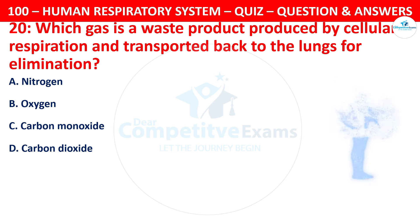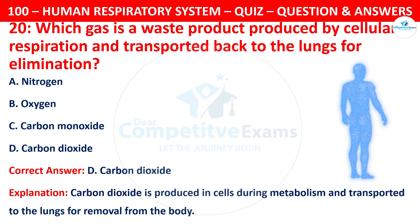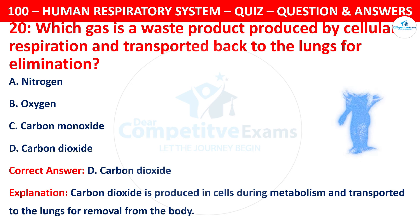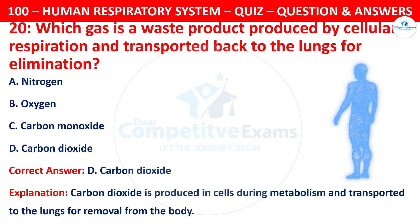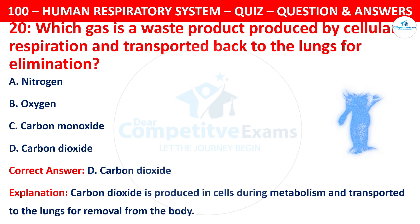The correct answer is D, carbon dioxide. Carbon dioxide is produced in cells during metabolism and transported to the lungs for removal from the body.